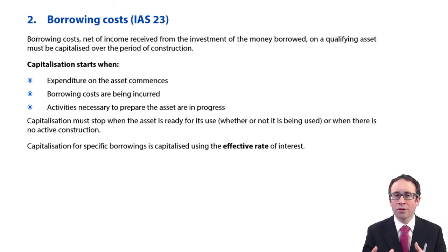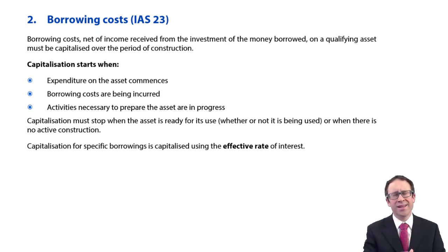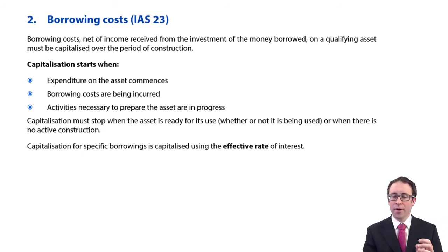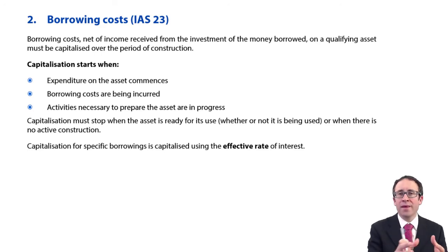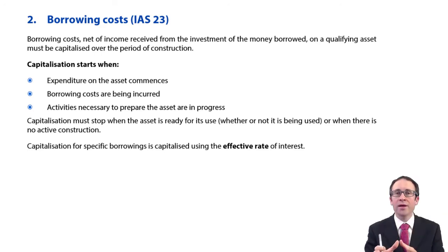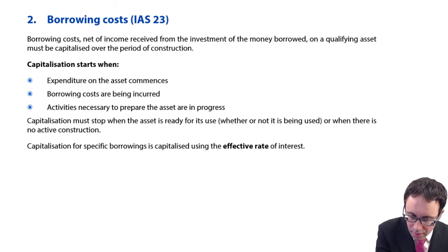There are rules we need to follow, because we don't want businesses capitalising borrowing costs on any loan and claiming it's part of the construction of the asset. There has to be strict criteria. First of all, the expenditure on the asset must have started — you must actually be spending the money you've borrowed. If you've borrowed the money but aren't spending any of it on construction, we cannot start capitalising. Capitalisation begins when the expenditure has started.